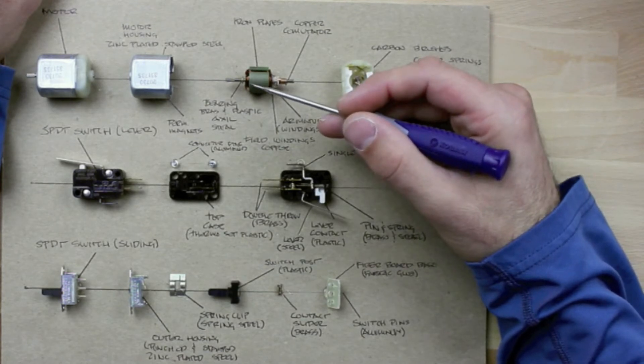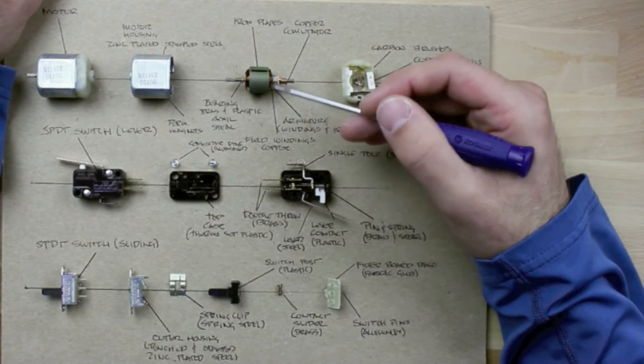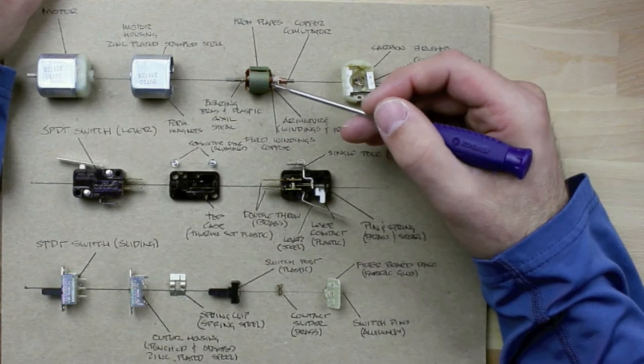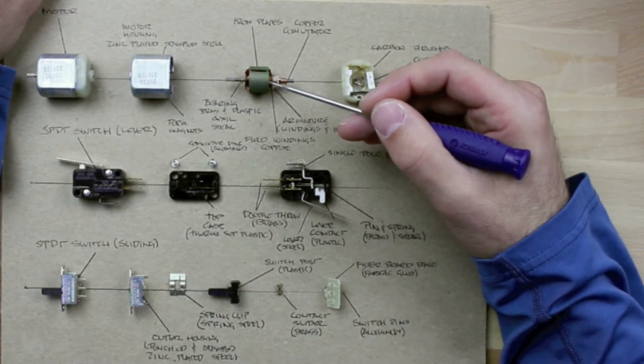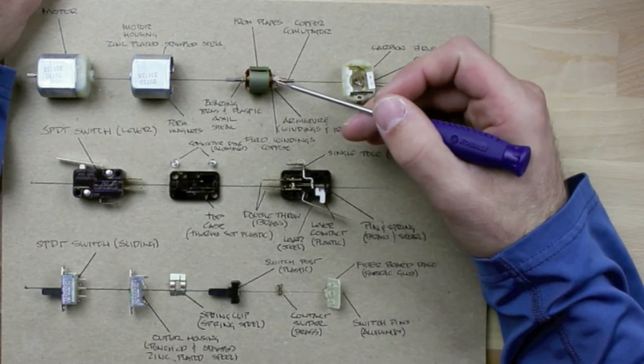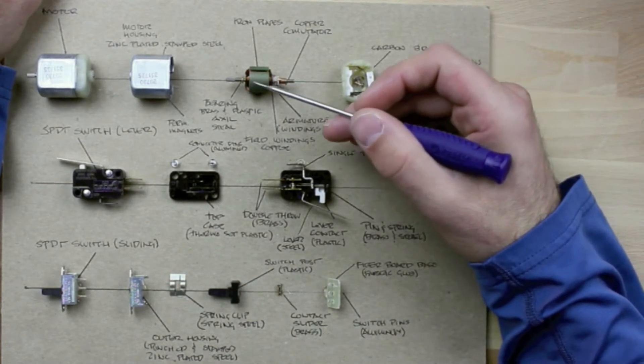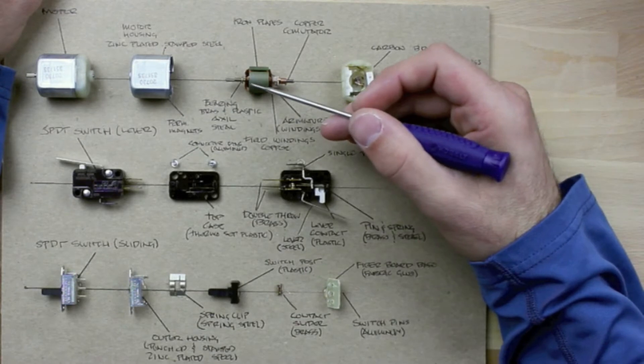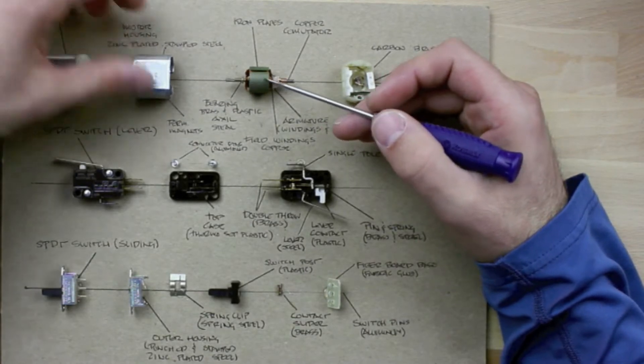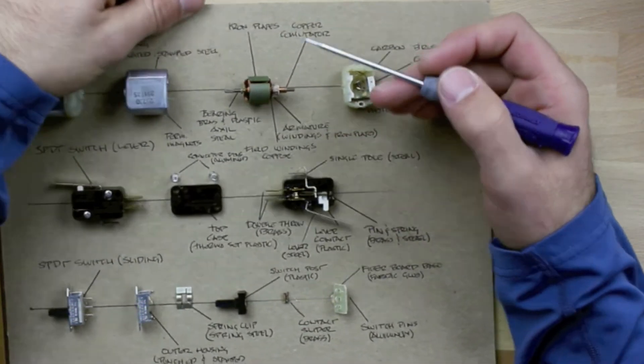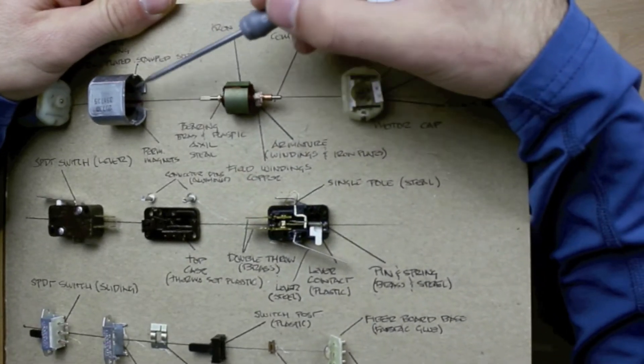The copper winding and the iron plate combination, the iron plates are used because it makes the field a lot stronger. If you run electricity through a copper coil, you can generate an electromagnetic field. That electromagnetic field then pushes on some permanent magnets that we have mounted inside of our motor. So there's a permanent magnet here and another one here.